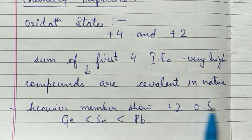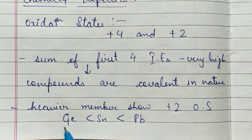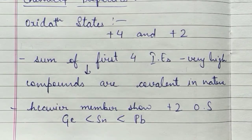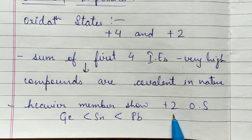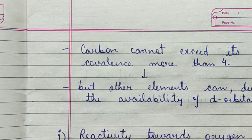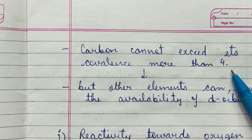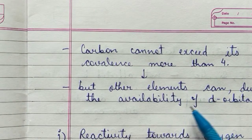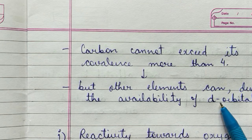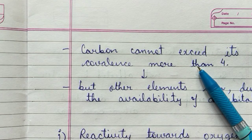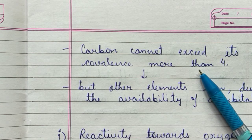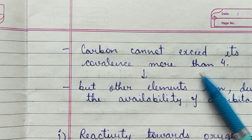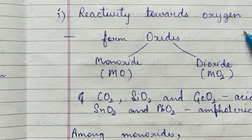Carbon cannot exceed its covalency beyond four, unlike other elements which have vacant d-orbitals available that allow covalency to increase. Carbon does not have such d-orbitals. This also leads to anomalous behavior — carbon shows different behavior compared to the rest of its family members, which we will study further.